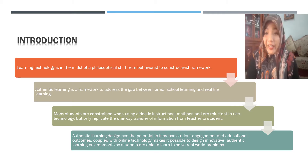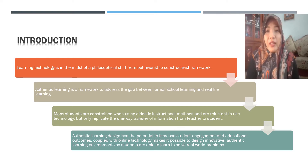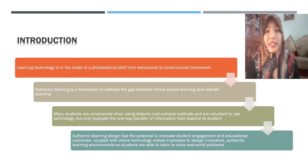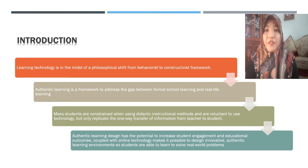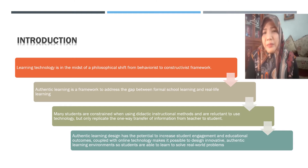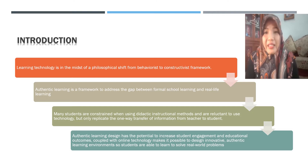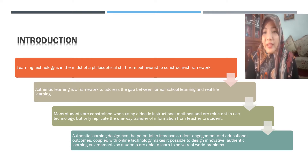Why Authentic Learning? Because Authentic Learning is a framework to address the gap between formal school learning and real-life learning. Learning technology is in the midst of a philosophical shift from a behaviorist to a constructivist framework, and many students are constrained when using didactic instructional methods and are reluctant to use technology.